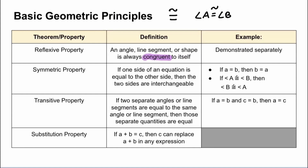Now we have the transitive property: if two separate angles or line segments are equal to the same angle or line segment, then those separate quantities are equal. If we have two separate values A and C, we don't know their values — for all we know they're completely unrelated. But if A is equal to B and C is equal to B, then it should stand to reason that A and C are also equal.